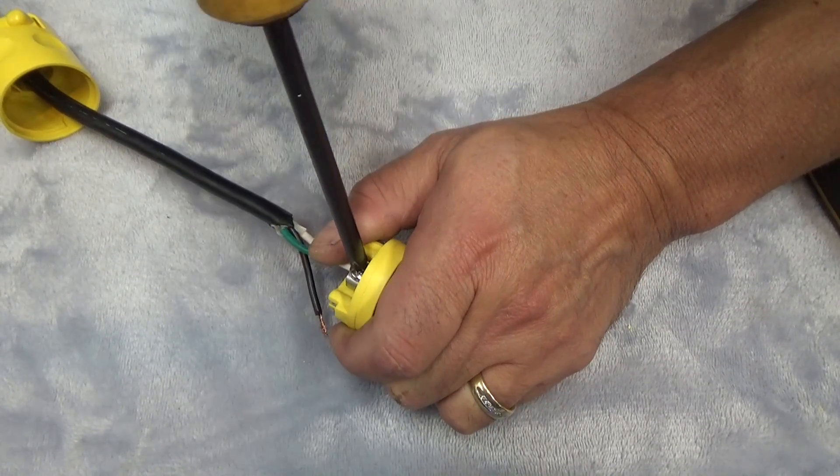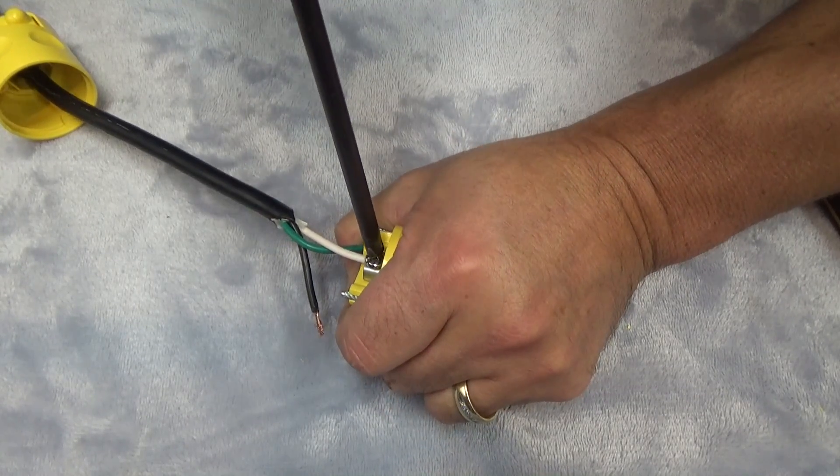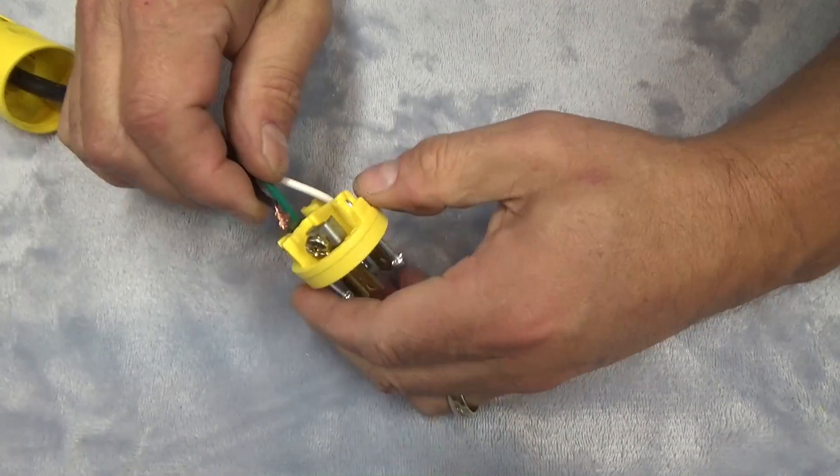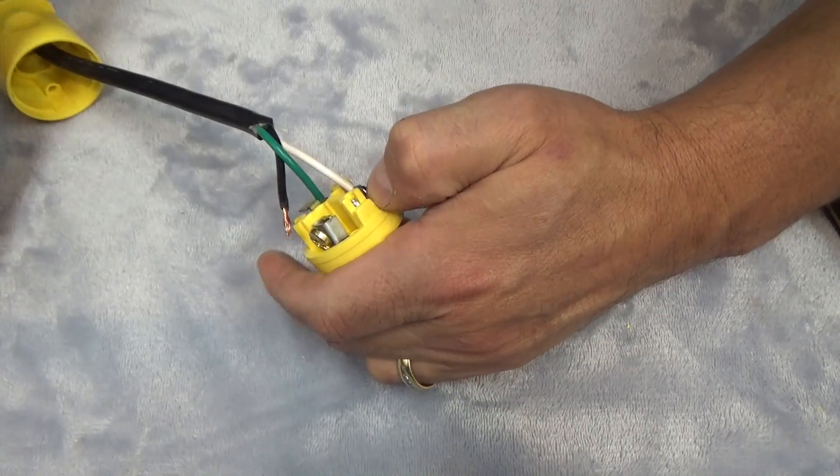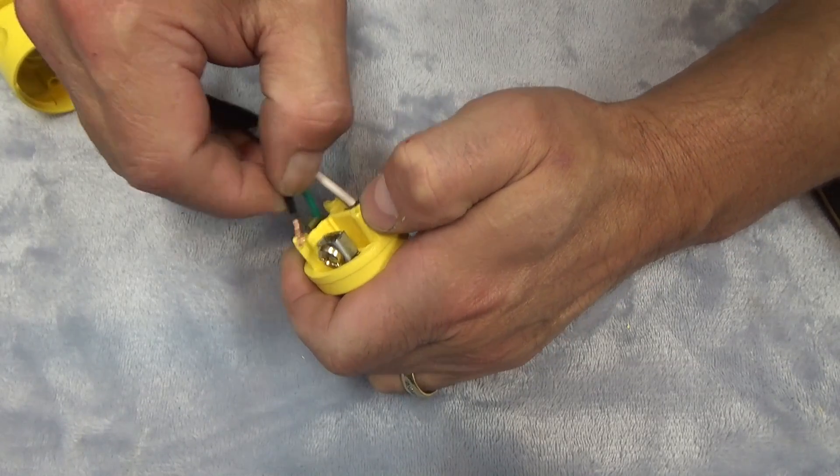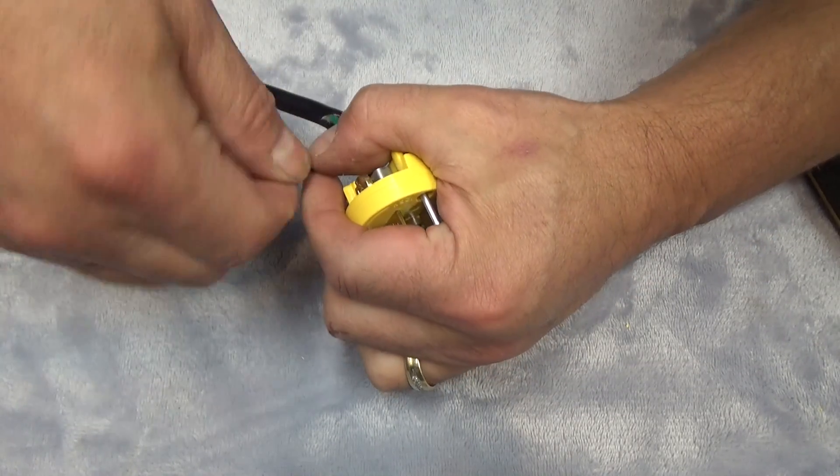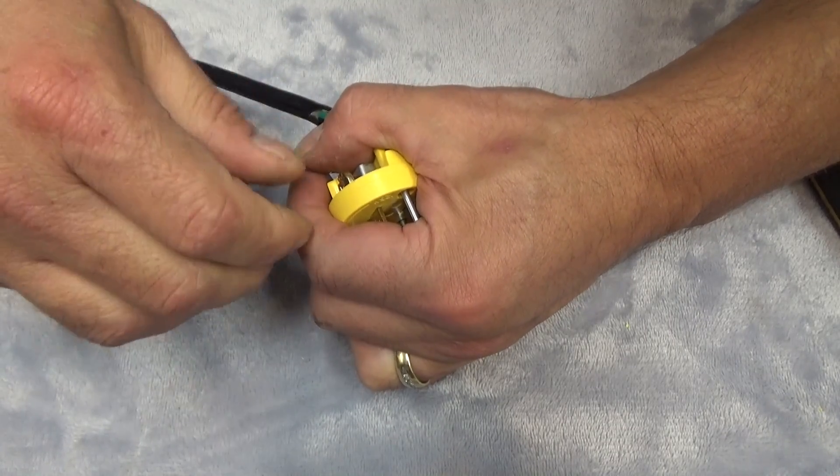And again, black to gold. My friend Gary always said, remember Beverly Hillbillies, black gold, black to gold. So the screw is gold. That's going to be the same on outlets and most things. Now, obviously, if we got into 240 volts, you've got two hot wires. So the rule doesn't hold true there.